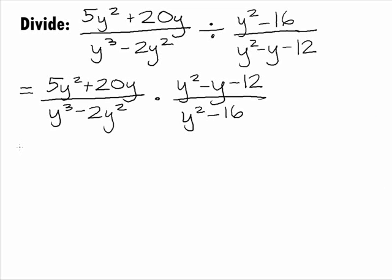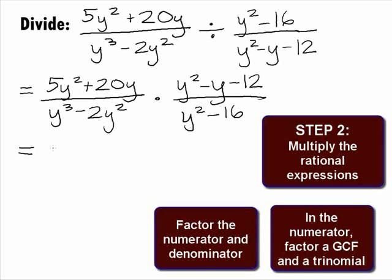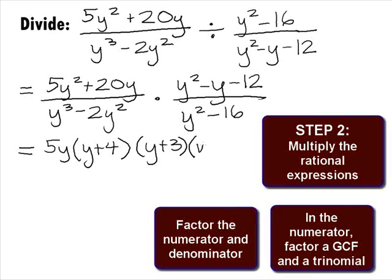In Step 2, we want to follow steps of multiplying the rational expressions as shown in Examples 1 and 2 of this tutorial. Factoring the first numerator, we can factor out a 5y and get 5y times y plus 4. The second numerator is a trinomial that will factor as y plus 3 times y minus 4.